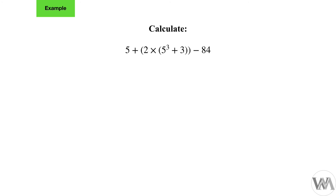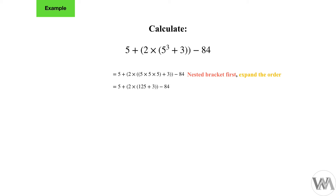Our first step is to do the nested bracket. Inside it we have an exponent, so we expand it first: 5 to the power of 3 is 5 times 5 times 5. We calculate that to get 125, but we still have plus 3 inside the nested bracket, so we add 125 and 3 to get 128, finishing the nested bracket.